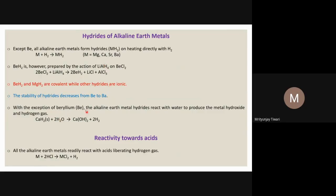With the exception of beryllium, the alkaline earth metal hydrides react with water to produce the metal hydroxide and hydrogen gas. For example, calcium hydride (CaH₂, solid) reacts with water to give Ca(OH)₂ plus 2H₂. Calcium hydride is ionic — it contains Ca²⁺ cation and H⁻, which is a very strong base.